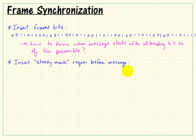especially if we're saying that the message is after the alternating ones and zeros of the preamble, how do we know what is actually a start bit?